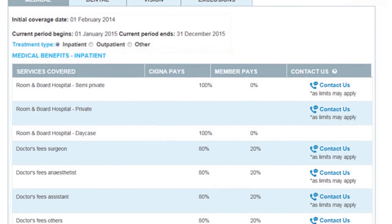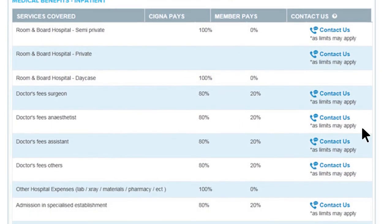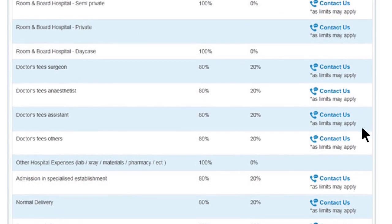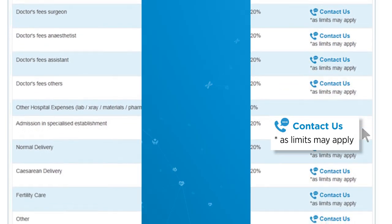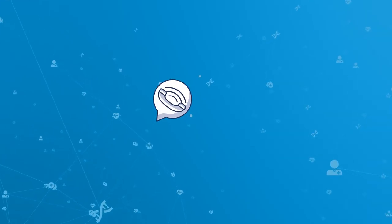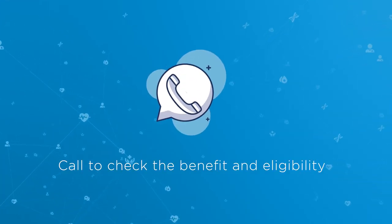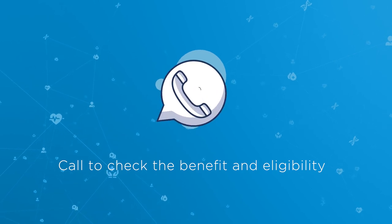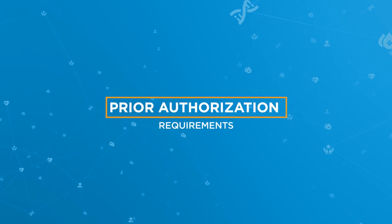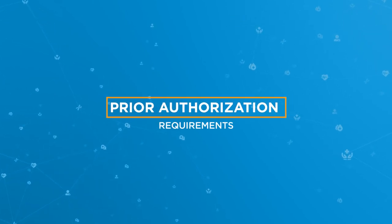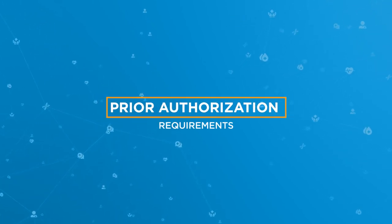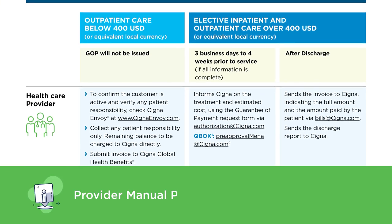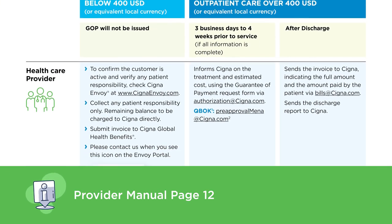For any service marked with a Contact Us icon on the Cigna Envoy benefits table, you should call Cigna to check the benefit and eligibility. To help ensure that services rendered are part of the benefits, you may want to be familiar with our prior authorisation requirements, which can be located on page 12 of our provider manual.